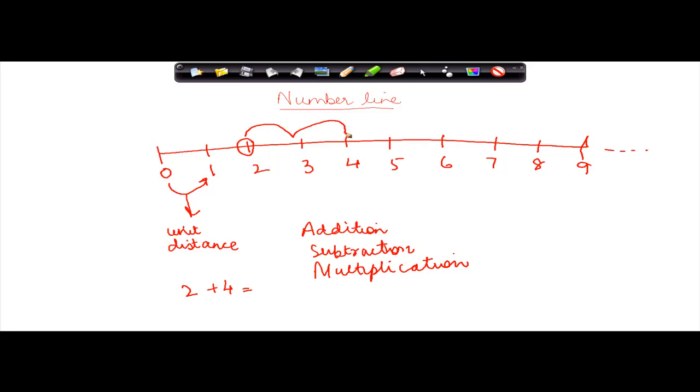1, 2, 3 and 4. And what do I get? I get 6. So 2 plus 4 is equal to 6. So through number line, what I have done is the addition of 2 numbers.